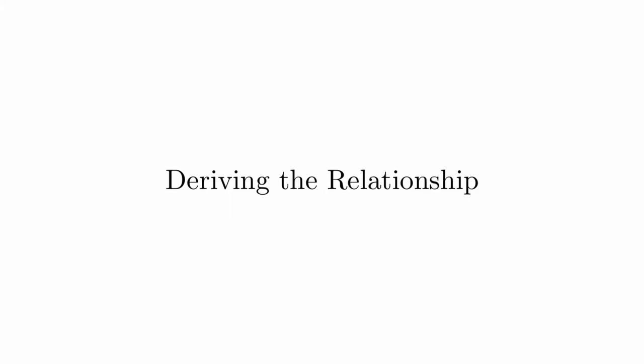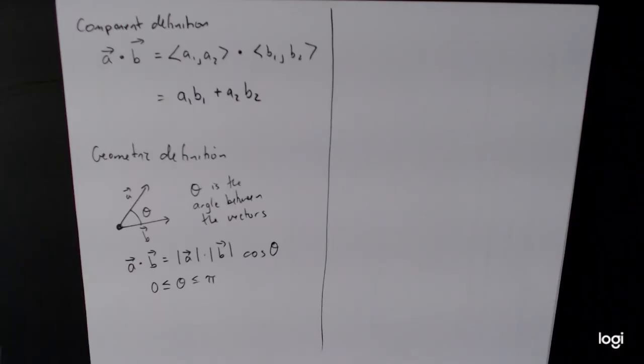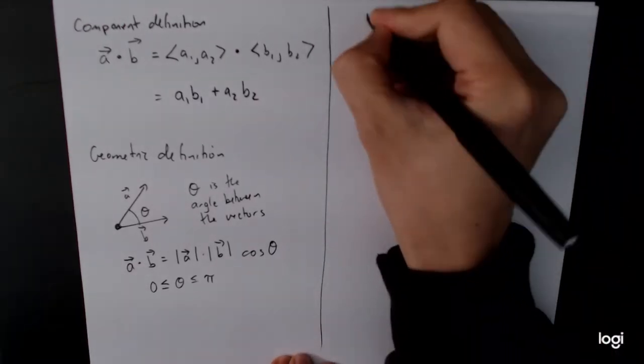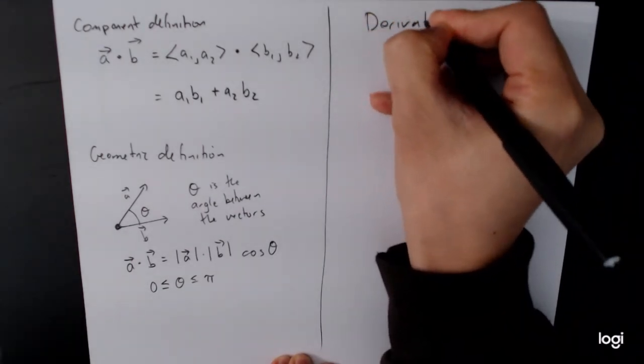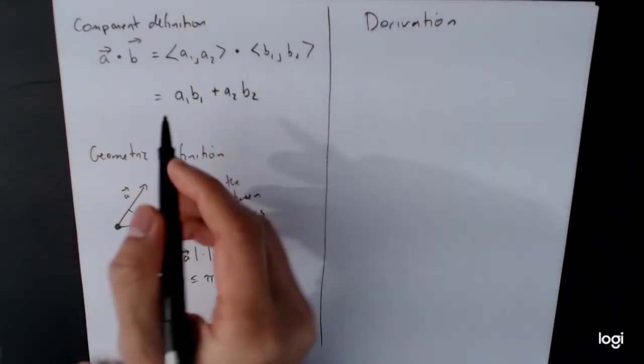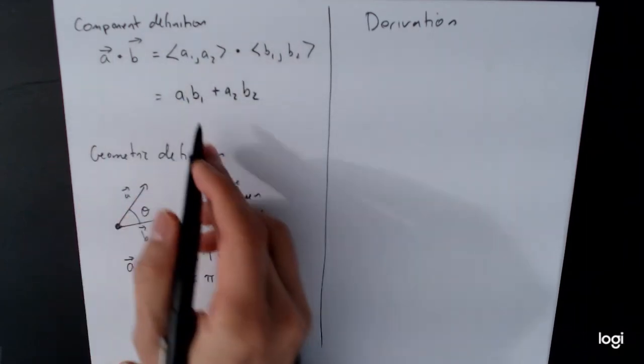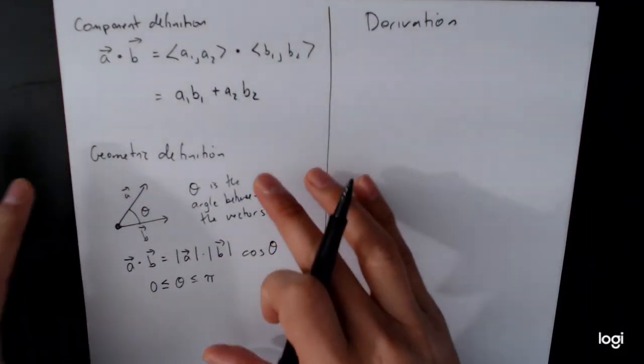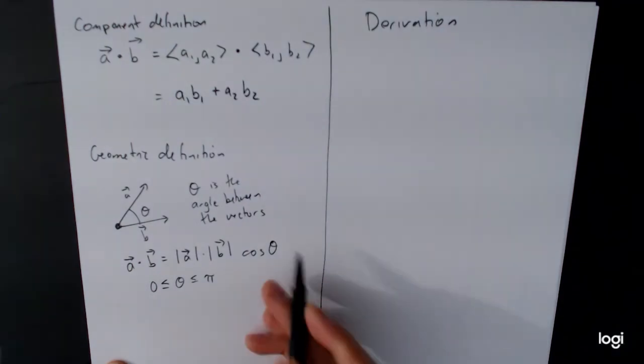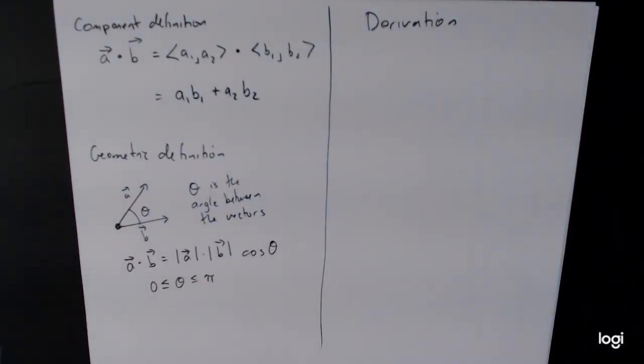Now if you take a look at these two formulas, you can see that they don't really look that similar to each other. And so it sort of leads us to ask the question, well how are these two things the same? It turns out that we can show that these two things are the same using polar coordinates. And so what we're going to do is we're going to actually work through that derivation. So the one that we're going to take as our basic definition is this one right here, the component definition. And we're going to figure out how we can take this definition and derive this formula from the geometric perspective.